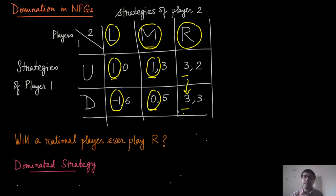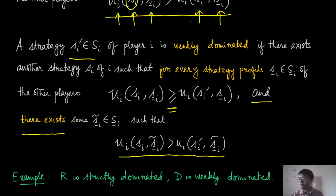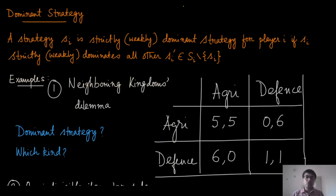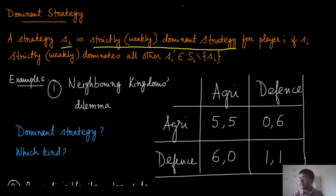To summarize: R in the above example is strictly dominated, while D is weakly dominated. Once we've talked about dominated strategies, it's the right time to talk about a dominant strategy — the strategy that has already dominated all others. If we can find a strategy that strictly or weakly dominates all other strategies, we call S_i a strictly or weakly dominant strategy if it strictly or weakly dominates all other strategies of that player.